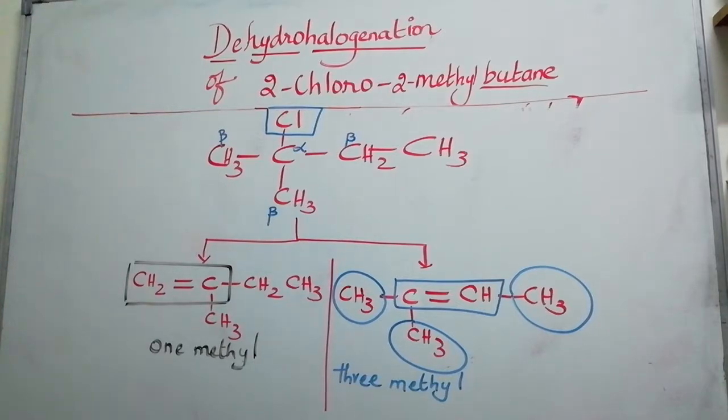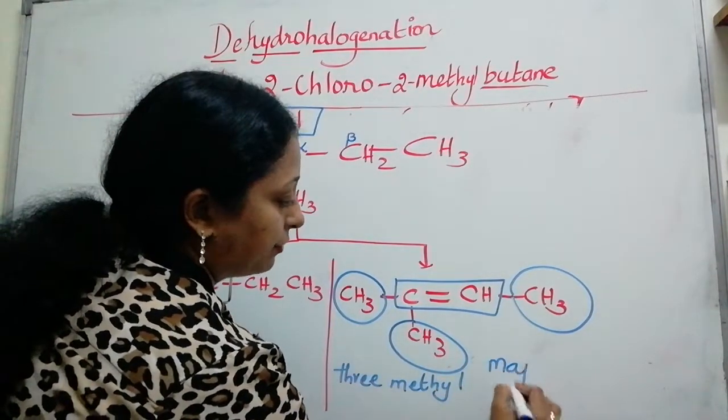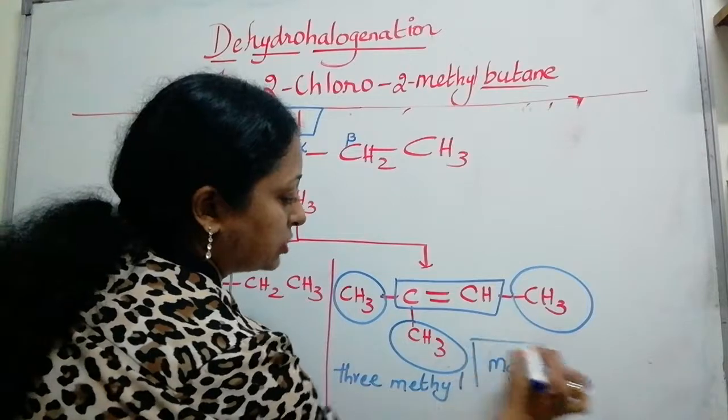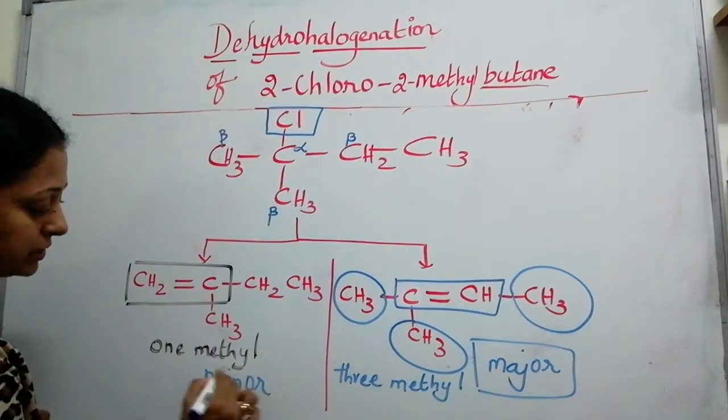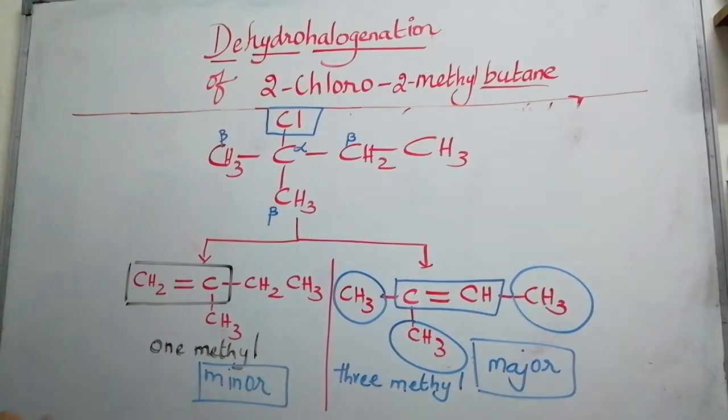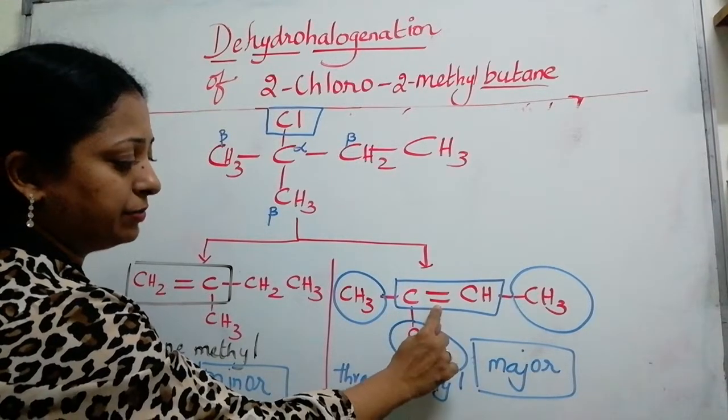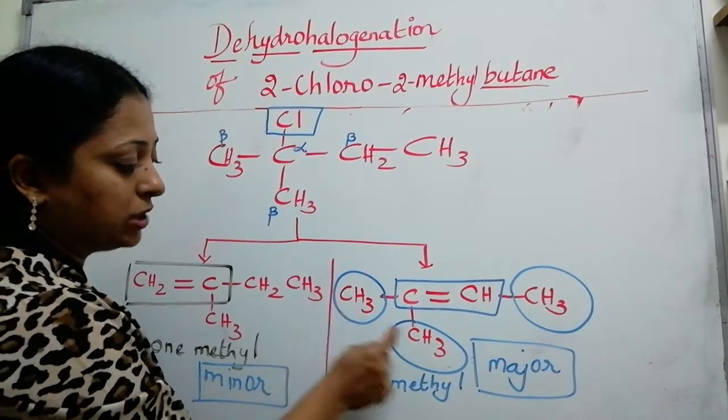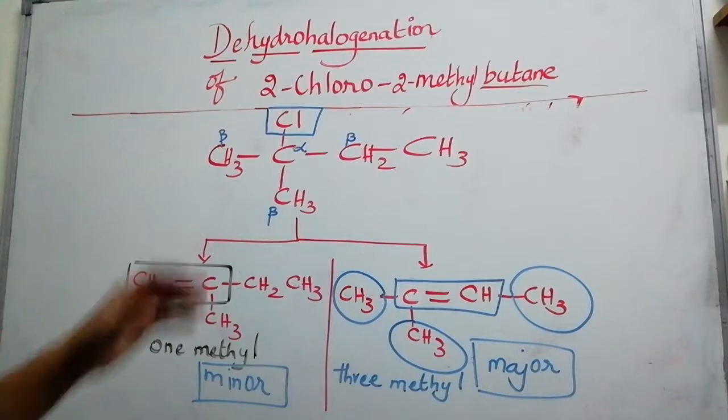According to the Saytzeff's rule, more the methyl groups attached to the carbon-carbon double bond, that will be considered as the major product. Therefore, this structure is a major product, whereas this structure is a minor product. Because in this structure, you will notice that one carbon-carbon double bond is surrounded by one, two, three, three methyl groups, which satisfies Saytzeff's rule.